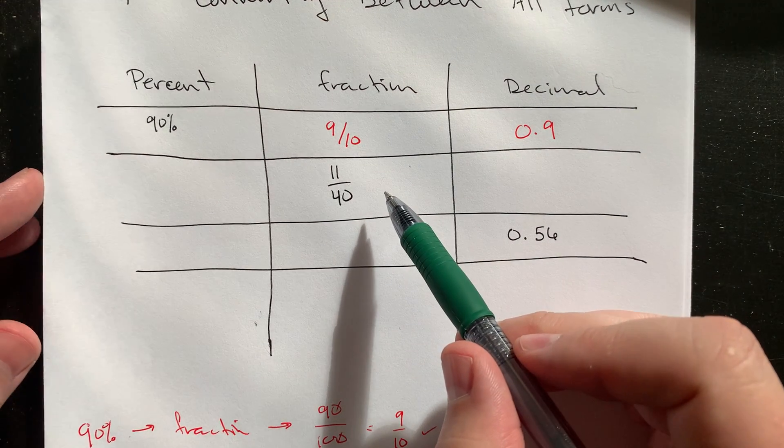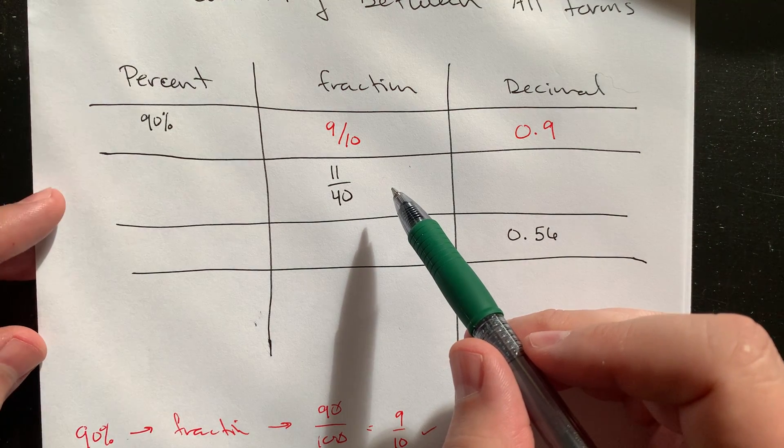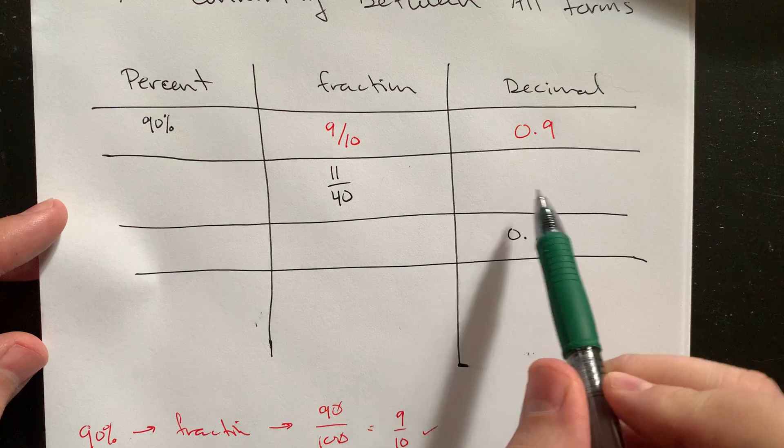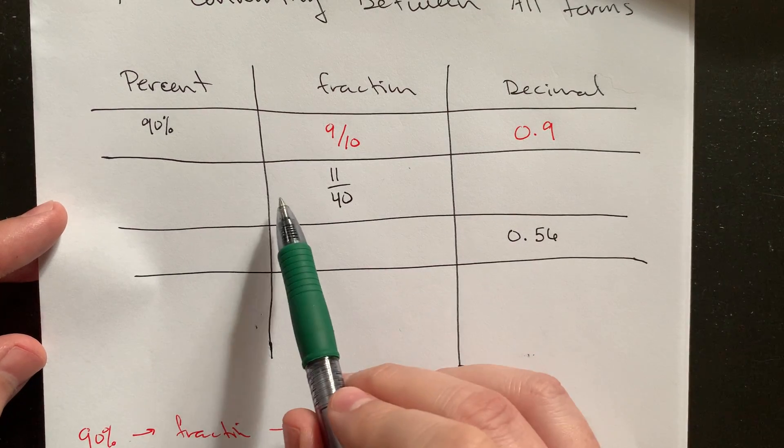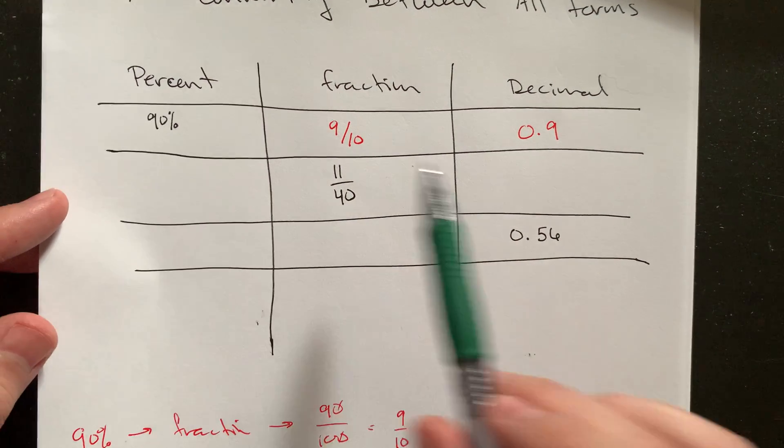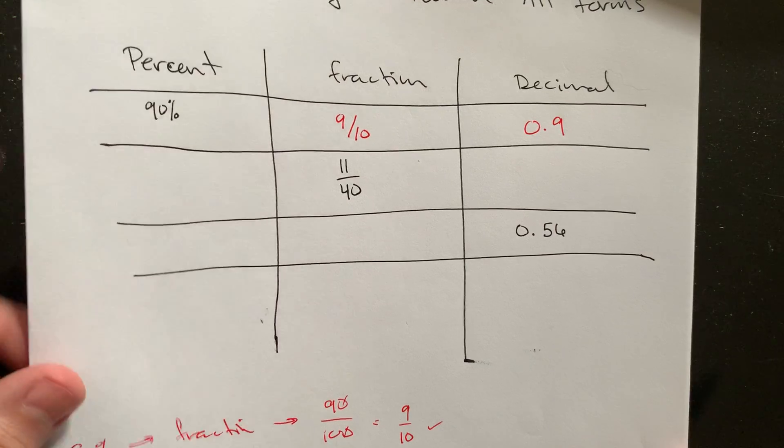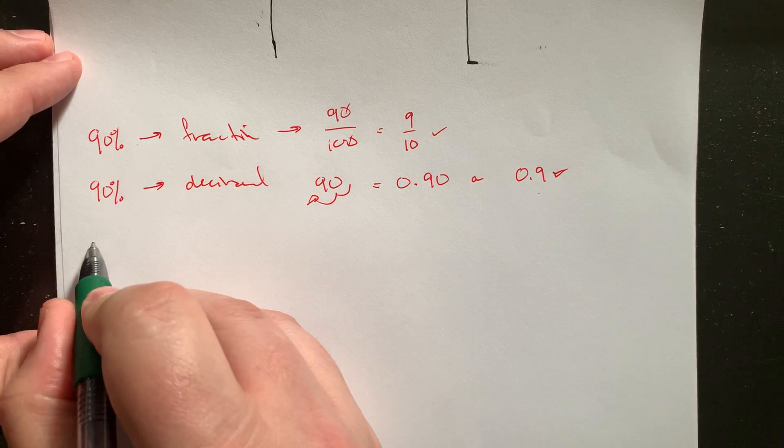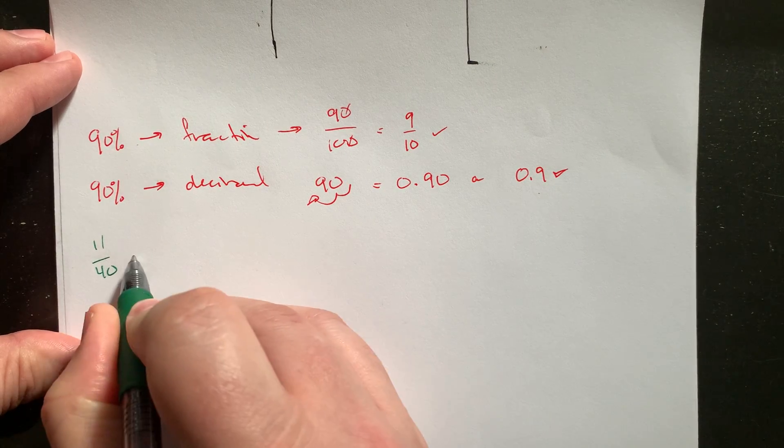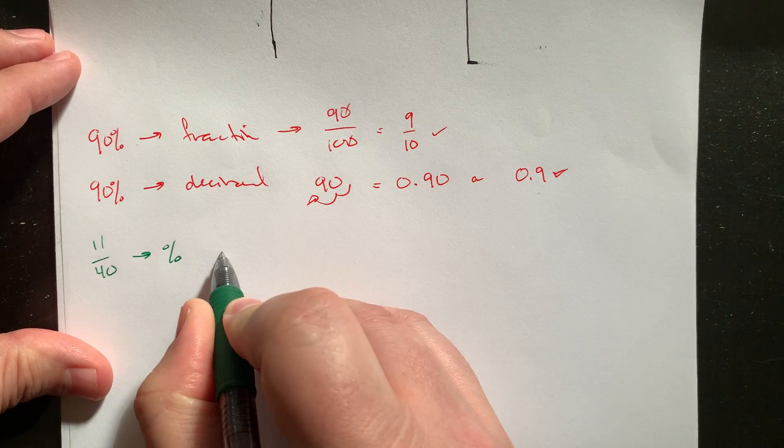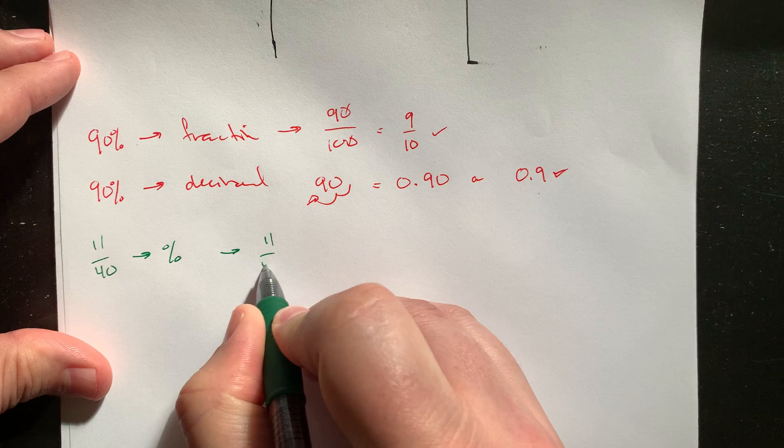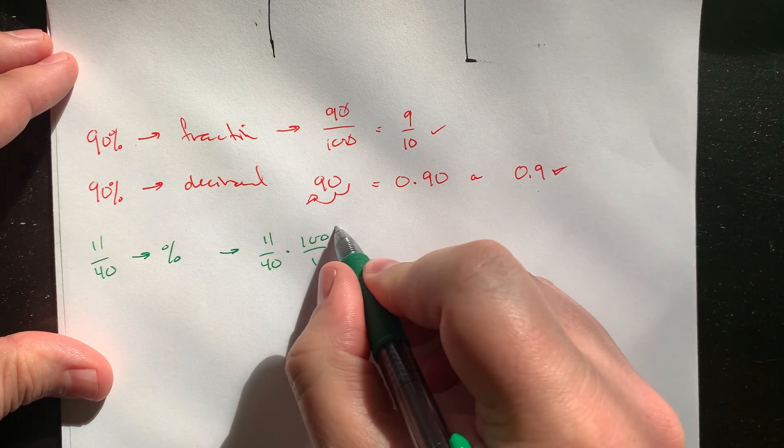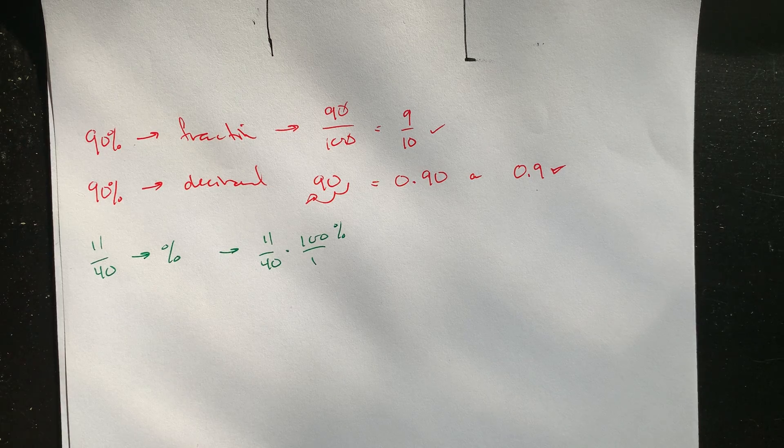If we were asked to start with the fraction instead, a couple different approaches. You could go fraction to decimal, do a long division here, or you could do a fraction into a percent and then from the percentage into the decimal. I think I'm going to find the percent first. This is what? So 11 over 40. So into a percentage, that's going to be 11 over 40 times 100, 100% rather than doing a division.